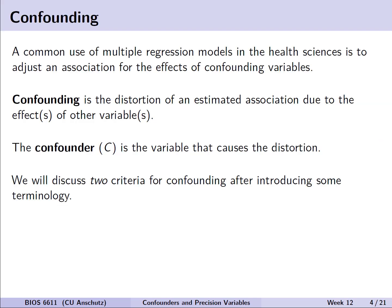A common use of multiple regression models in the health sciences is to adjust an association for the effects of what we call confounding variables. The idea of confounding is that there is a distortion of the estimated association due to the effects of other variables. A confounder c would be the variable causing this distortion between our outcome y and our primary explanatory variable of interest x. To help classify confounding, we'll introduce two different sets of criteria after some background and terminology.